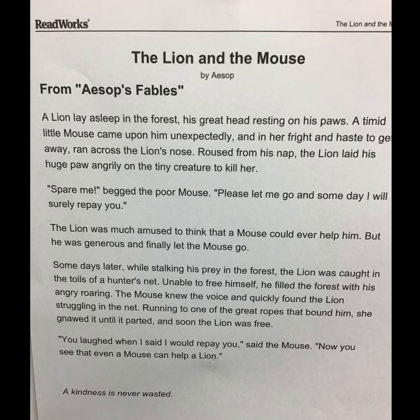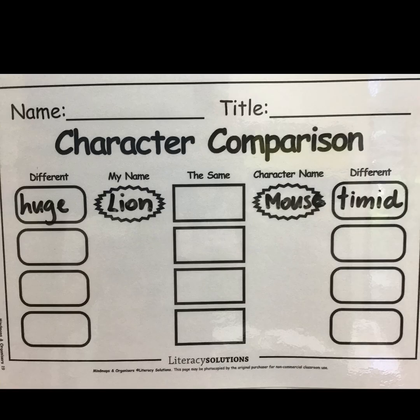So we've been introduced to two characters — the lion and the mouse. In our graphic organizer I've put the lion and the mouse as our two characters, and some things that are different. I wrote next to the lion's name that the lion is huge, and that's different to what the mouse is. And I wrote that the mouse was timid — a word from our text that means a bit scared and shy — which is also different to the lion.